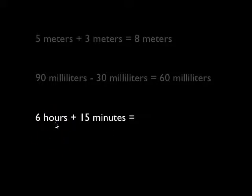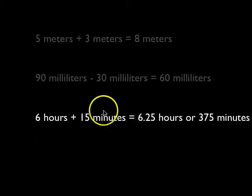Or, knowing that an hour is 60 minutes, 6 hours must then be 360 minutes plus 15 minutes. So our answer could either be 6.25 hours or 375 minutes. But notice we have to change it so that the units are identical before we can add those.